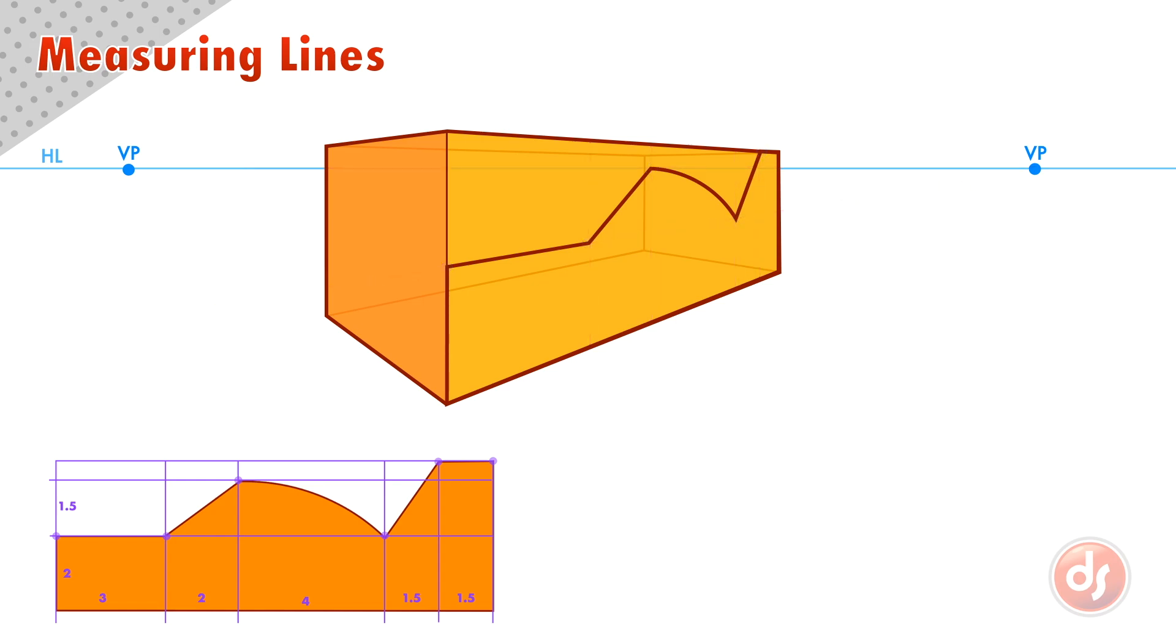Next we can build the thickness of our shape. We simply carry the corners of the front section to our vanishing points to find the other side.